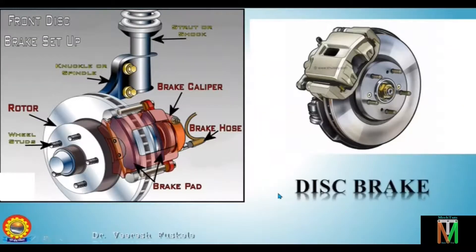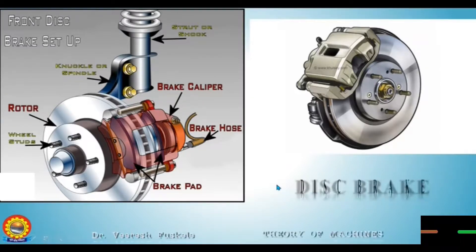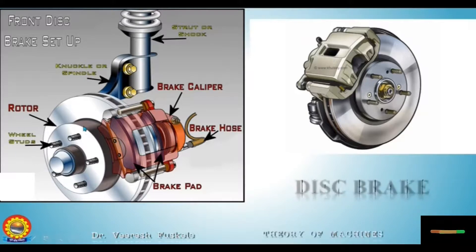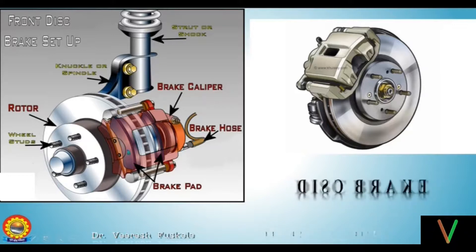Now let us discuss about disc brake. Though disc brake is not included in your syllabus, we will still see it as it is widely used nowadays in bikes. In disc brake, basically there is a brake caliper which has brake pads inside it, and this is the disc which rotates — the wheel is connected to this part. So as the pressure is applied hydraulically through the brake hose, these brake pads are pressed towards the rotor and thus the brake is applied.